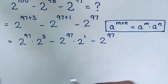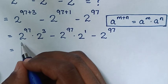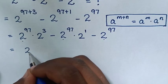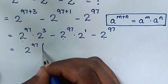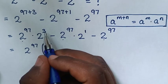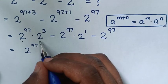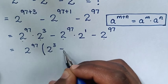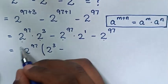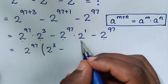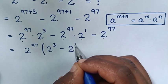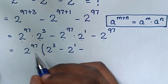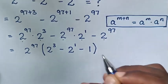Then, in the next step, 2 power of 97 is common, so take 2 power of 97 out of the bracket. Then this divided by this is 2 power of 3, minus this divided by this is 2 power of 1, then minus this divided by this is 1, bracket.